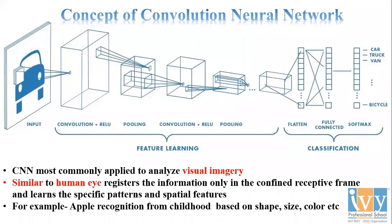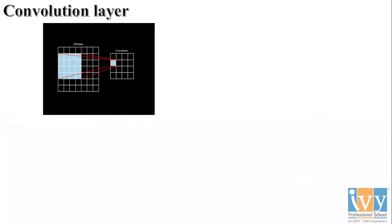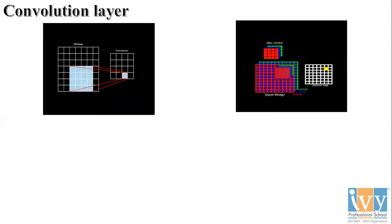Hi guys, we are once again back with Part 2 of our Convolutional Neural Network. Previously, we saw what a convolutional neural network is and drew a similarity between the CNN and the human eye — how it distinguishes distinct features and helps in categorizing the different classes of an image.